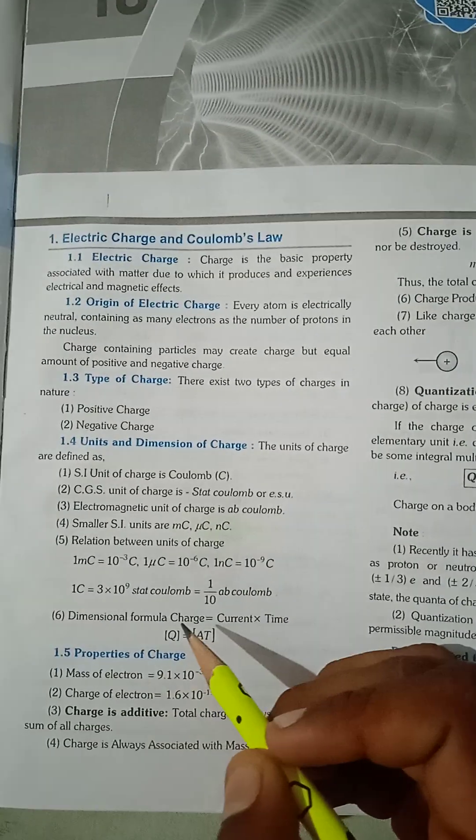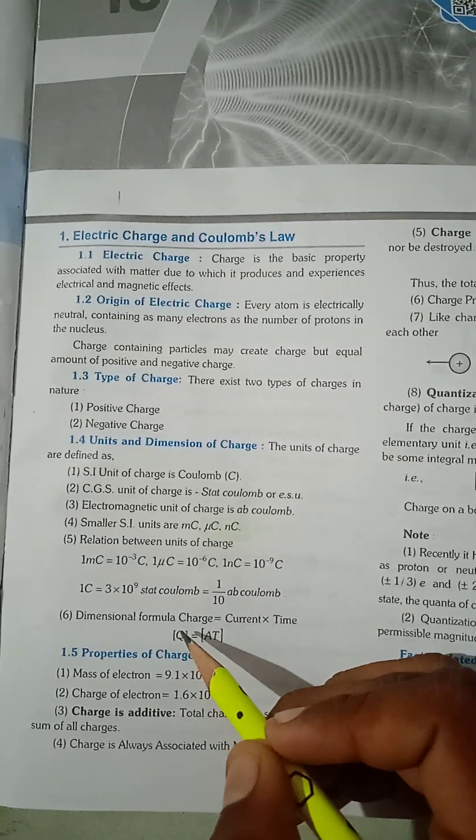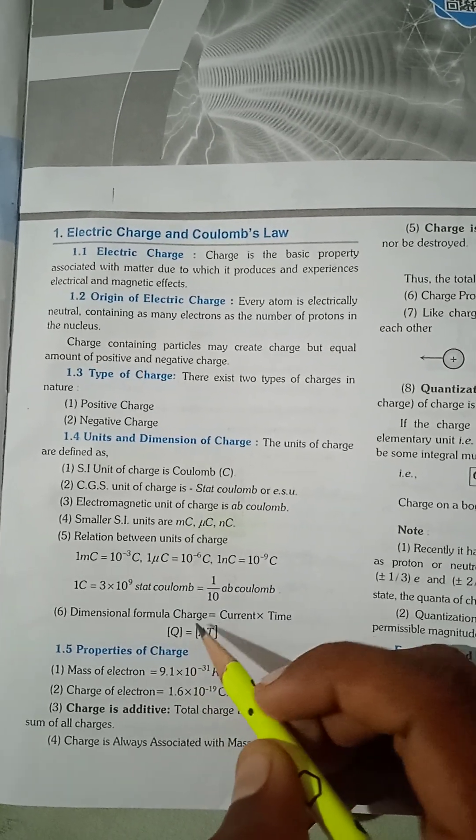Dimensional formula of charge is current into time. So Q equals A into T.